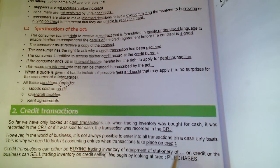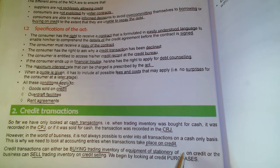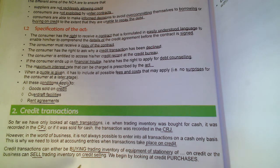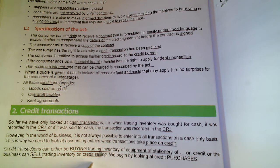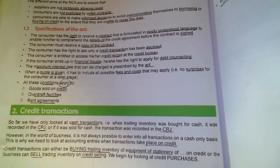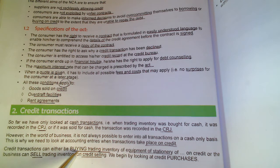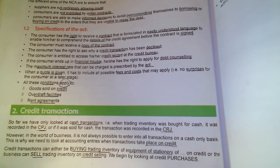When we buy on credit, those transactions go into the creditors journal. We can also sell trading inventory on credit — that's the business selling to others — and those transactions go into the debtors journal. So basically, if we buy on credit it goes to a creditors journal, and if we sell on credit it goes to a debtors journal.